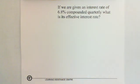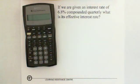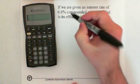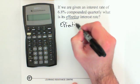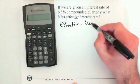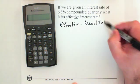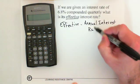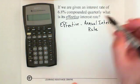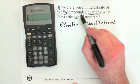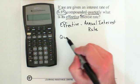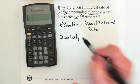We're given the following question: if we are given an interest rate of 6.8% compounded quarterly, what is its effective interest rate? So let's start with what is effective. Well, effective means annual, so we want the annual interest rate. In this question we are given 6.8% quarterly, and they want us to change it from quarterly to annual.